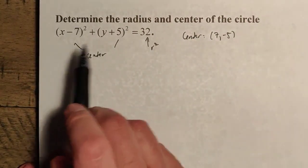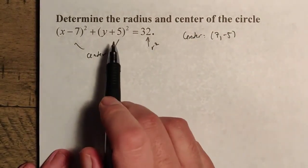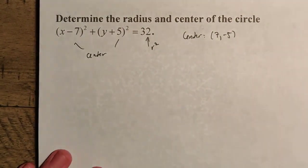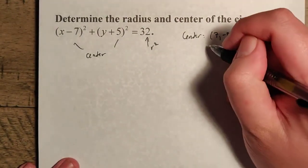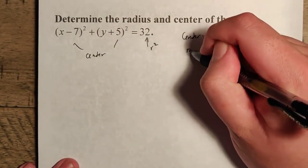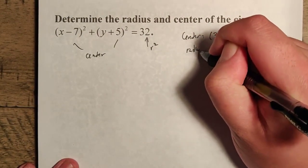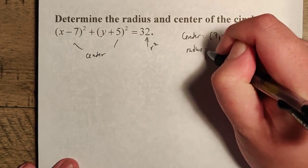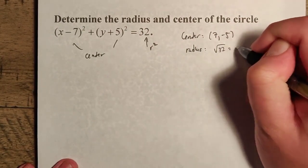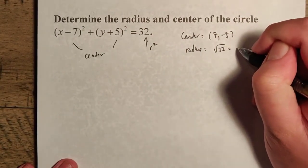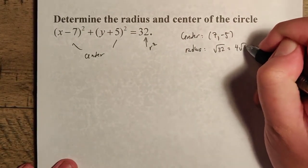Remember, we have to reverse the coordinates because with the distance formula, that's subtraction. And our radius is going to be the square root of 32, which is 4 radical 2.